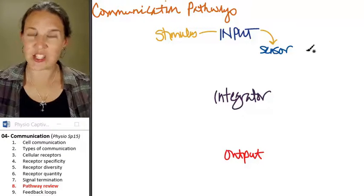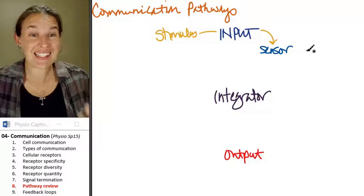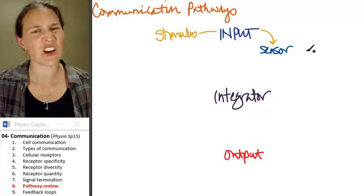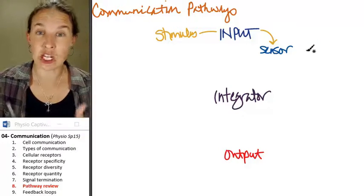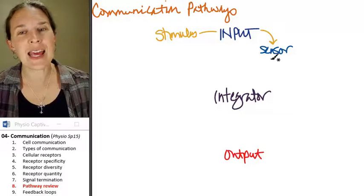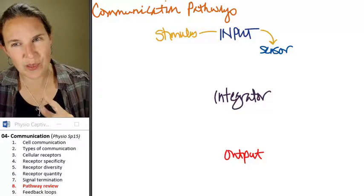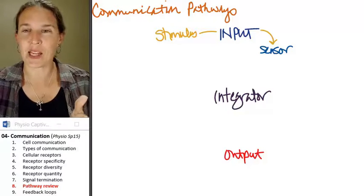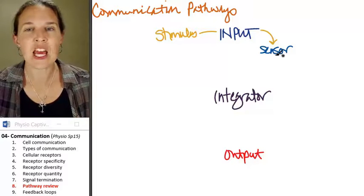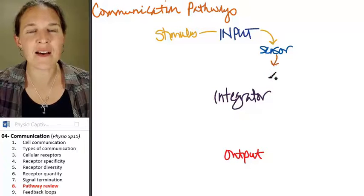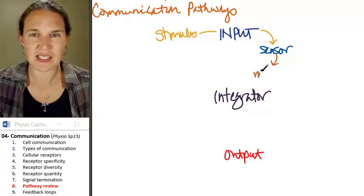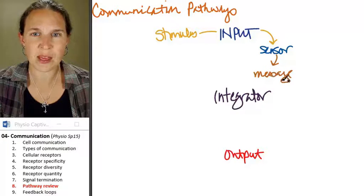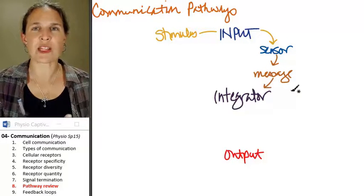Somehow the stimulus initiates a change in the sensor. How does it initiate the change? That's physio. That's what we're doing in this class is to figure out how that happened. So the sensor picks up the change and generates some kind of basically a message that is sent to the integrator.